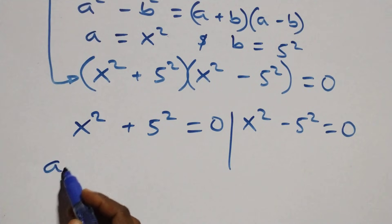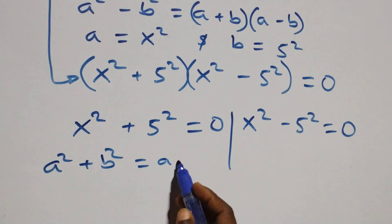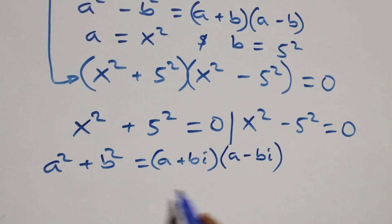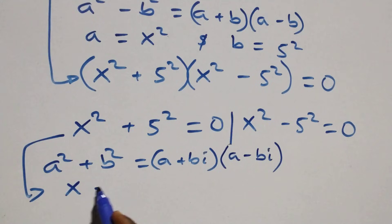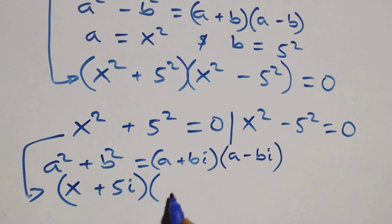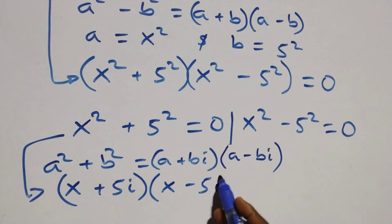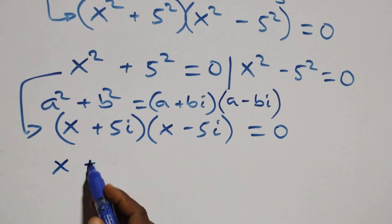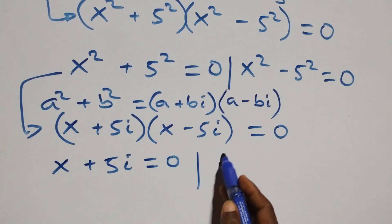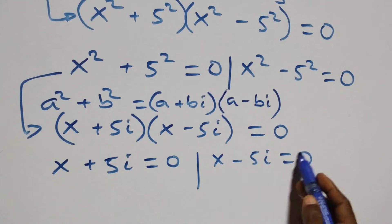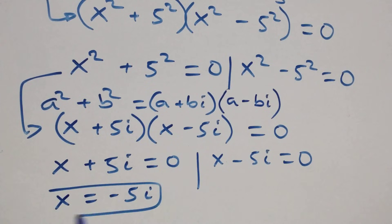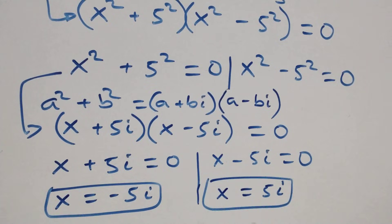For the first case, a squared plus b squared is the same thing as (a + bi)(a - bi). So what we have becomes (x + 5i)(x - 5i) equals zero, giving two possible cases: x + 5i = 0 or x - 5i = 0. Solving these, x equals minus 5i, which is a complex solution, and x equals 5i, which is also a complex solution.